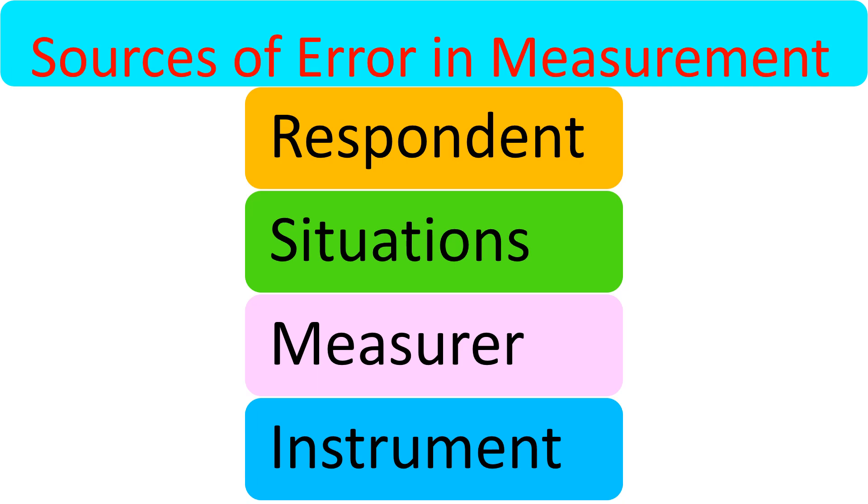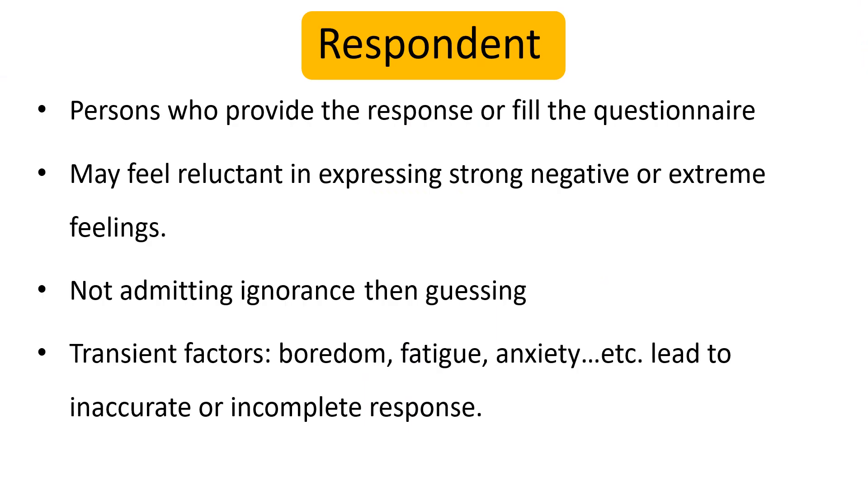Let's see one by one. The first source of error in measurement is the respondent. The respondent means a person or an individual who provides a response or fills our questionnaire or provides a response for our interview. If the respondent may feel reluctant in expressing strong negative or extreme feelings, there may be an error.